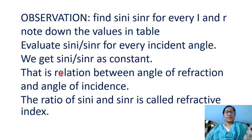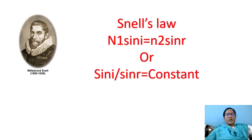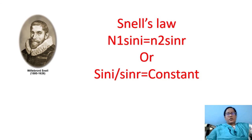Children, what did you observe in this activity? For every angle of incidence I and refraction R, note down the values in a table and evaluate sin I by sin R. For every incident angle we get sin I by sin R as a constant. The ratio of sin I and sin R is called the refractive index. This scientist's name is Snell — Willebrord Snell — who found Snell's law: n1 sin I equals n2 sin R, or sin I by sin R equals constant. In this lab activity we also proved sin I by sin R is equal to constant.